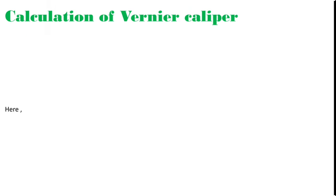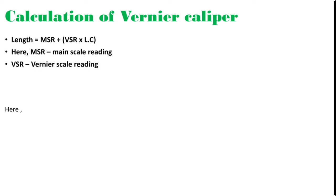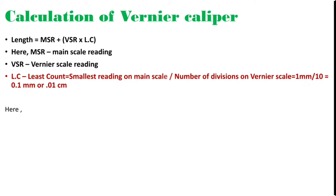Next is how we do calculation of vernier caliper — how we take the reading. The formula for calculation is: MSR (main scale reading) plus VSR (vernier scale reading) multiplied by least count. Least count equals the smallest reading on main scale divided by number of divisions on vernier scale, which is 1 mm divided by 10. So the least count of vernier caliper is 0.1 mm or 0.01 centimeter.